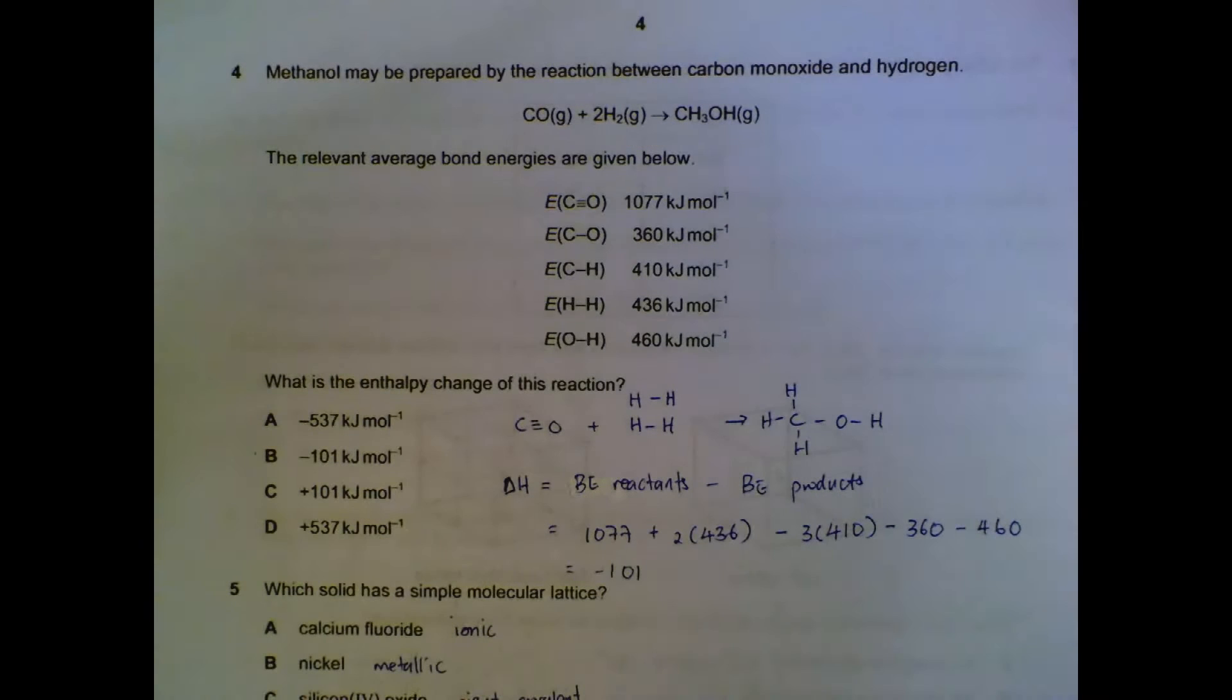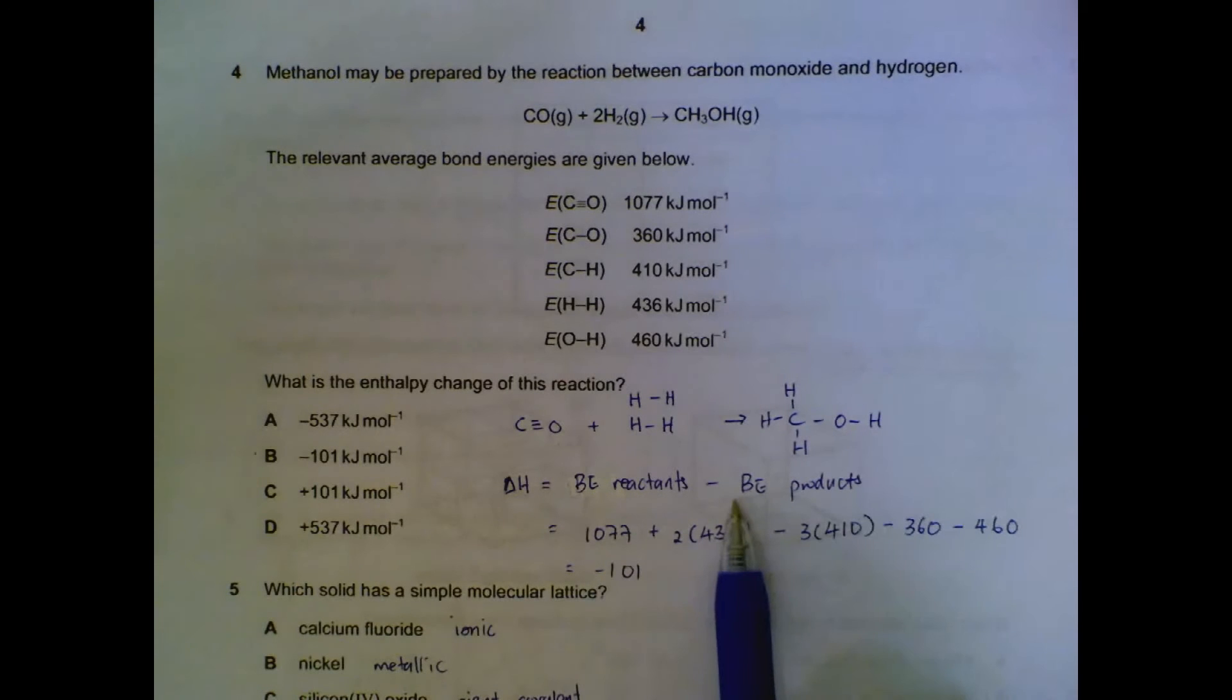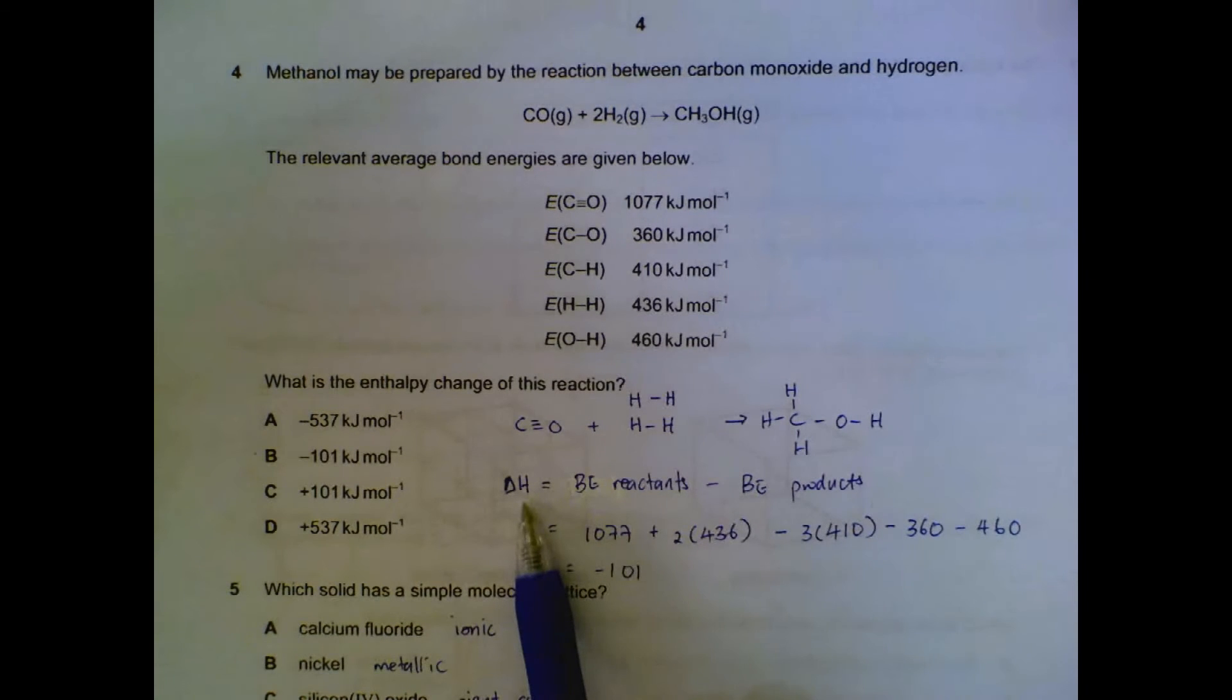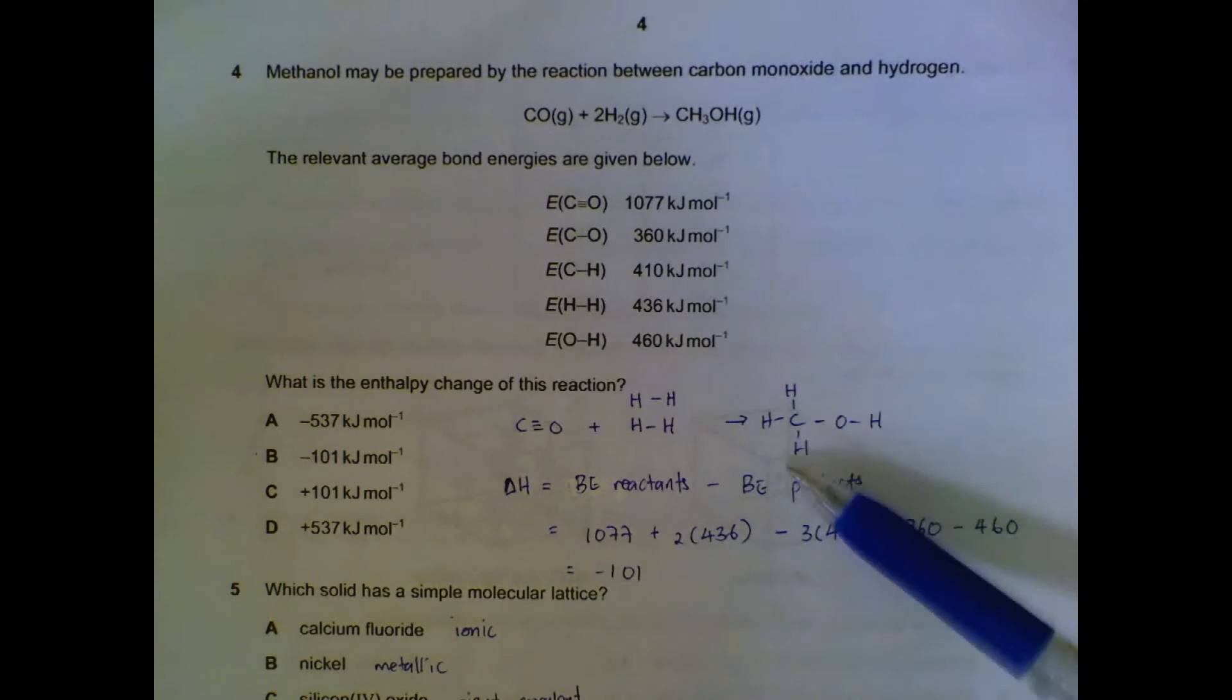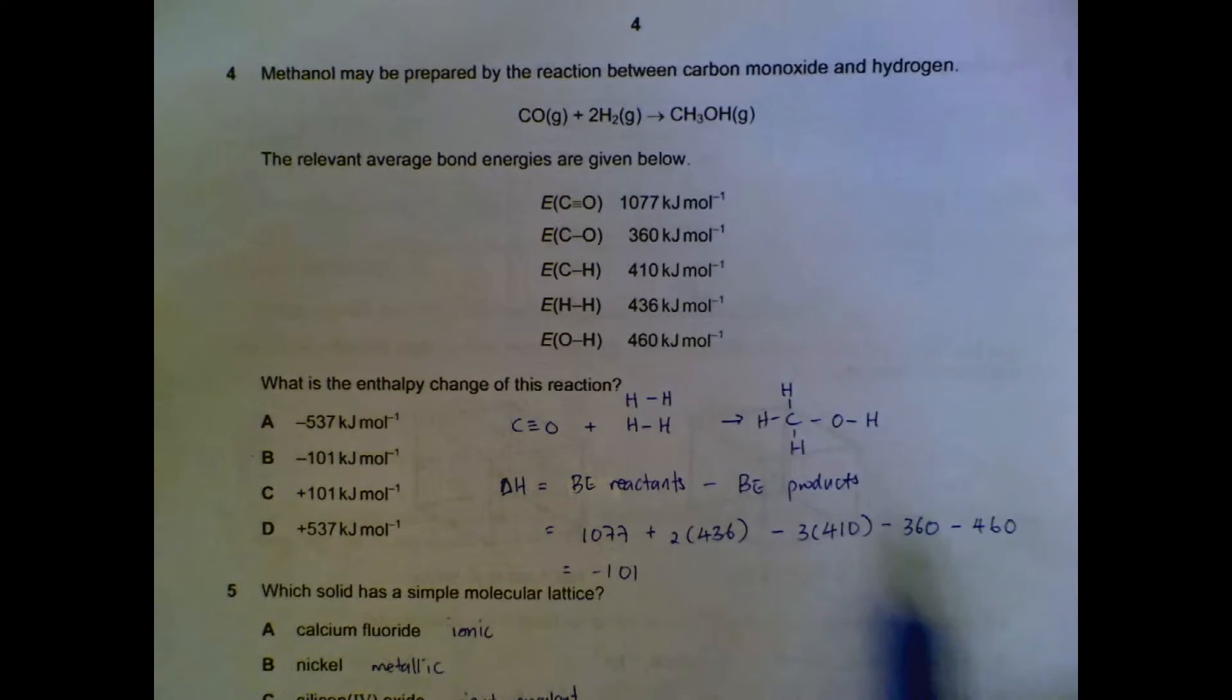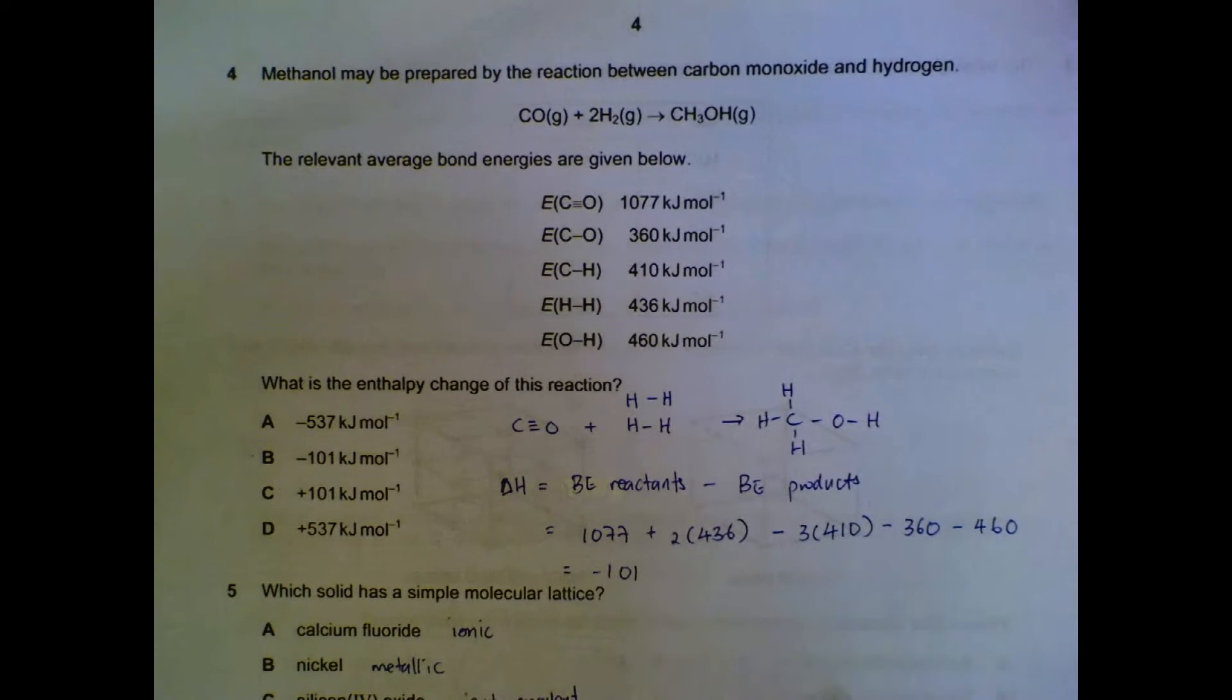Number four: enthalpy change of this reaction. If you are given bond energy, the general equation is bond energy of reactants subtract bond energy of products equals enthalpy change. So breaking of bonds: we break the CO bond, we break two of the hydrogen covalent bonds. And then forming of products, we have three CH bonds form, one CO bond form, and one OH bond form. So the three numbers are here and we use our calculator, we will have minus 101 kilojoules, exothermic reaction.